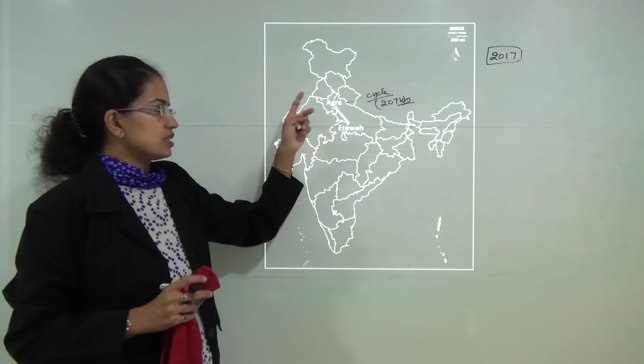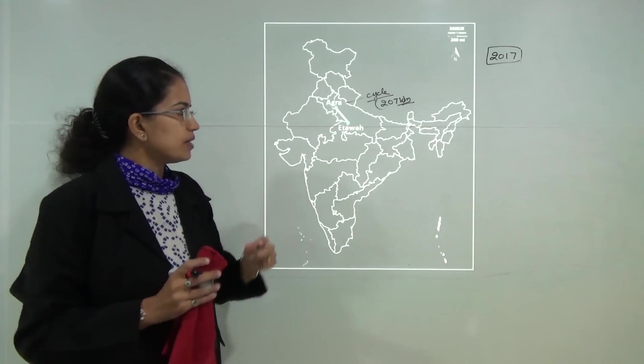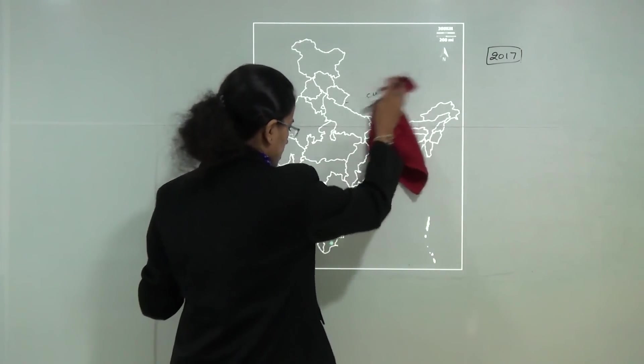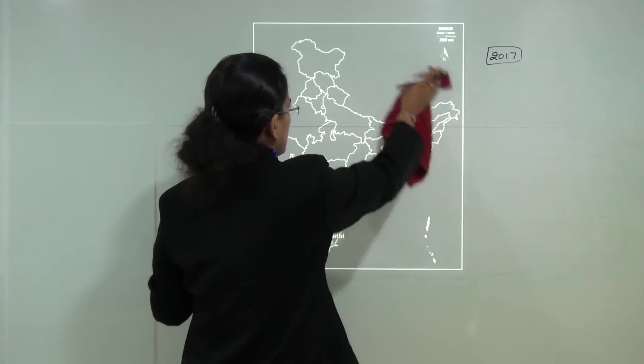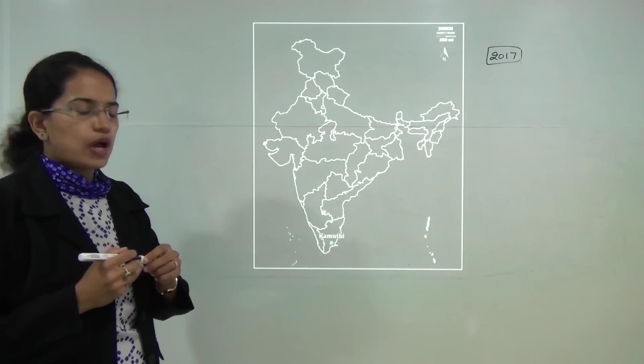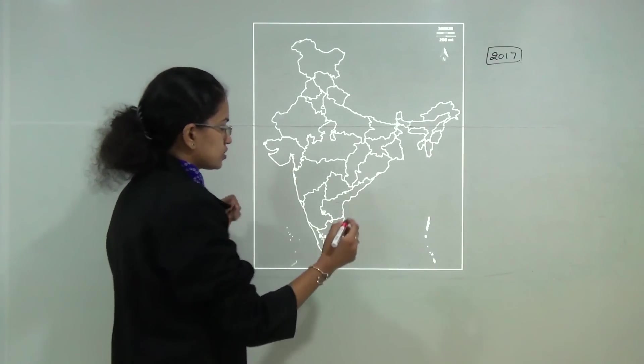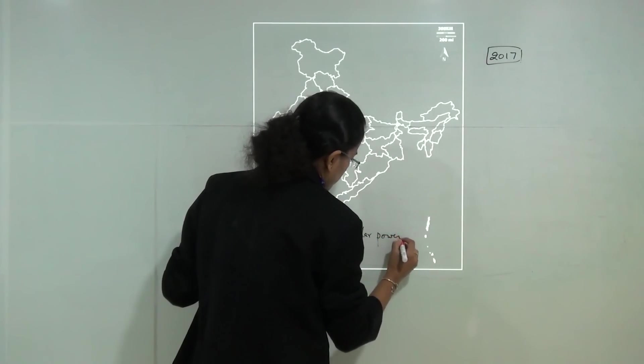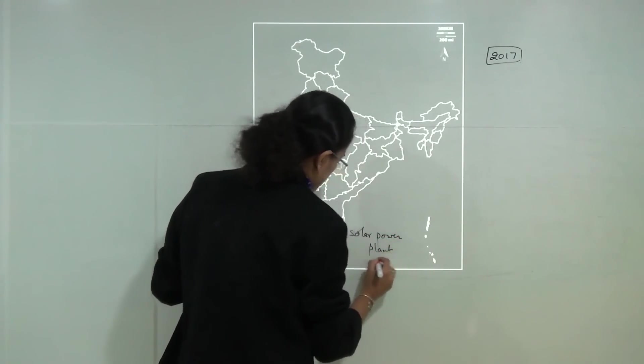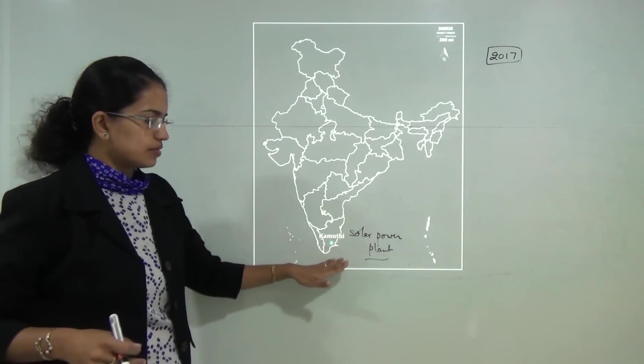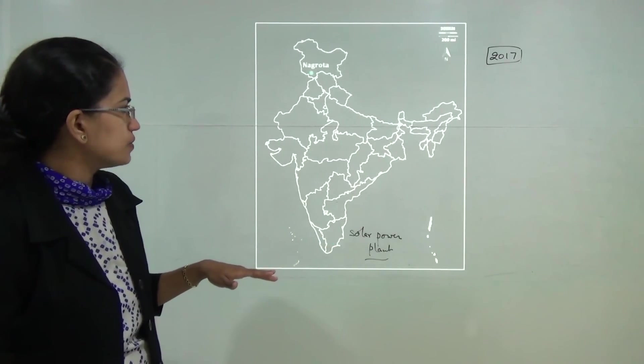The next important location is Kamuthi. Kamuthi has been in news recently. Kamuthi lies in Tamil Nadu and it is the world's largest solar plant that would be established here. World's largest solar power plant in Kamuthi. This Kamuthi lies in Ramanathapuram district of Tamil Nadu.